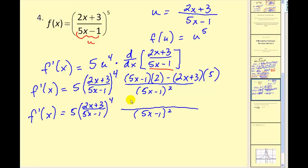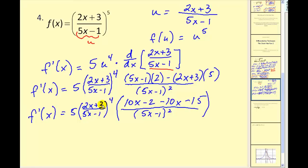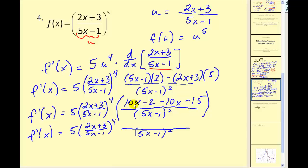Let's distribute the 2 — we're going to have 10x minus 2. Here we have 5 times 2x, that would be 10x, but we're subtracting it, so minus 10x. And then we have a positive 15, but we're subtracting, so minus 15, and this is being multiplied by the other fraction. We do have 10x minus 10x, so that simplifies out, and our numerator is going to be negative 17.